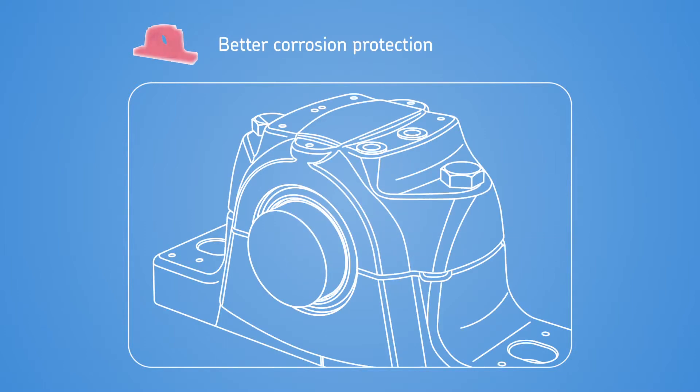SE housings are painted graphite gray using a water-based paint that protects them in accordance with corrosivity category C3. Unpainted surfaces are protected by a solventless rust inhibitor.